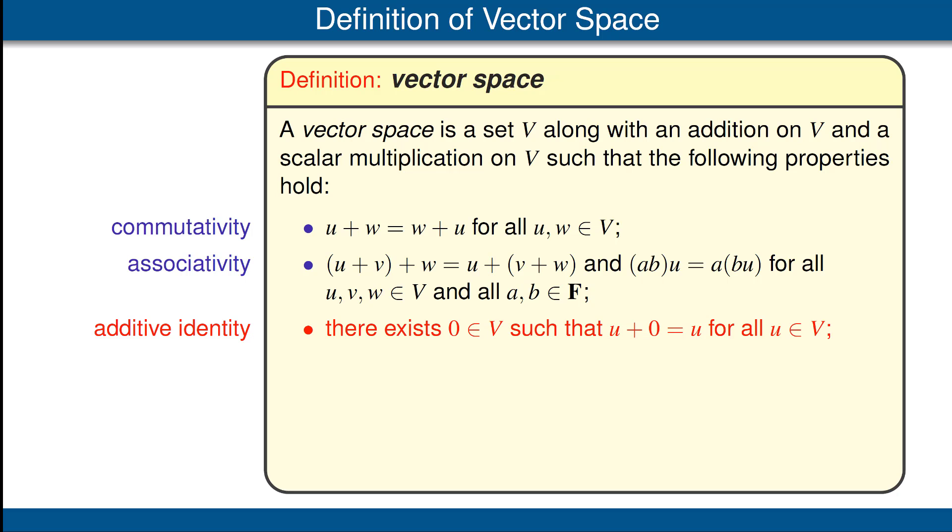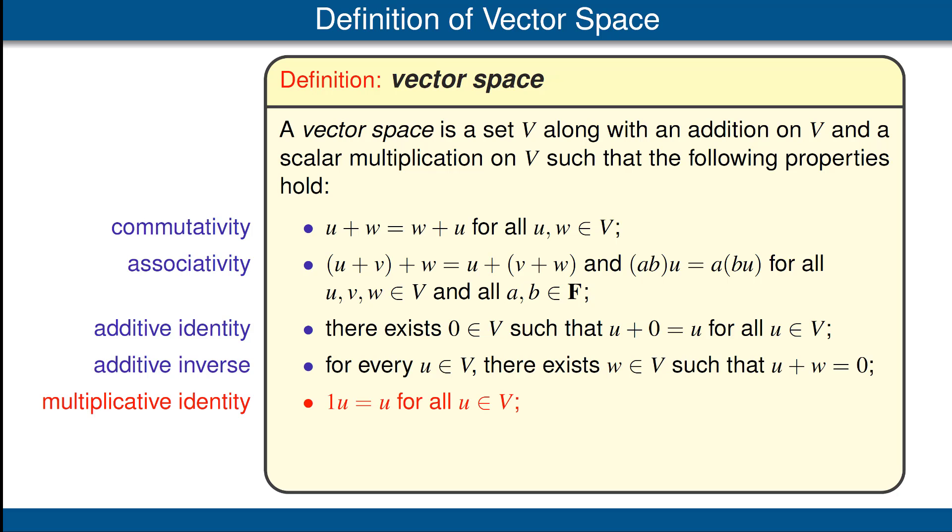Next, additive identity. There exists an element of V called 0, such that when we add it to any other element, we get the element we started with. Every element should have an additive inverse, meaning that we can add something to it and get 0, the additive identity. The scalar 1 works as we expected, meaning that 1 times any element of V gives us that element of V. And finally, we have two distributive properties. Notice they're slightly different. One of them involves one scalar and two elements of V, and the other one involves two scalars and one element of V. But in both cases, we can distribute multiplication over addition, as expected.